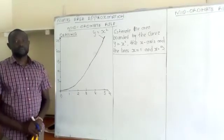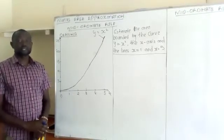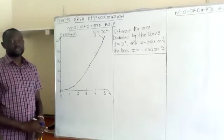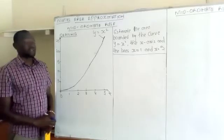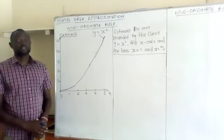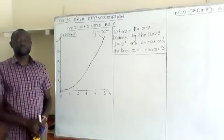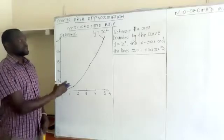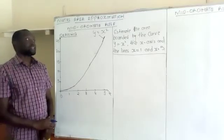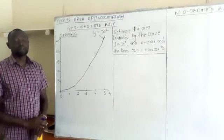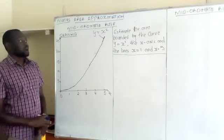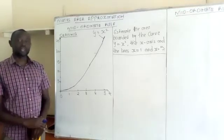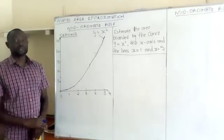Hello students, welcome to this mathematics session looking at area approximation. In our last session we looked at the trapezoidal method, and I hope you've been able to work out the various questions that were sent your way. We're now looking at another way of estimating the area — the third method, which we call the mid-ordinate rule. In the trapezium method we divided the region into trapeziums.